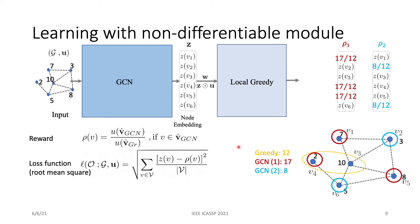Then, we will optimize the GCN by minimizing a loss function. That is basically the root mean square error between Z and Rho. And the optimizer is Adam optimizer with these configurations.